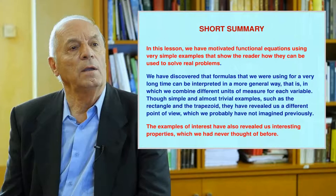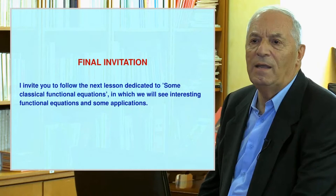In this lesson, we have motivated functional equations using very simple examples that show how they can be used to solve real problems. We have discovered that formulas we have been using for a long time can be interpreted in a more general way — one that combines different units of measure for each variable. Simple and almost trivial examples such as the rectangle and the trapezoid have revealed a different point of view. The examples of interest have also revealed interesting properties we have never thought of before. I invite you to follow the next lesson dedicated to classical functional equations and their applications.